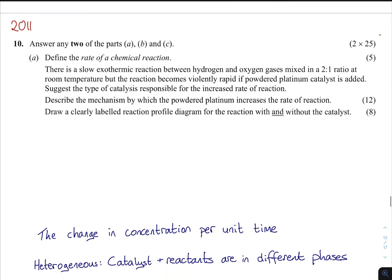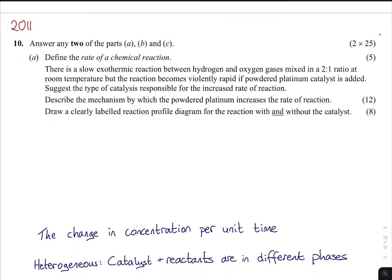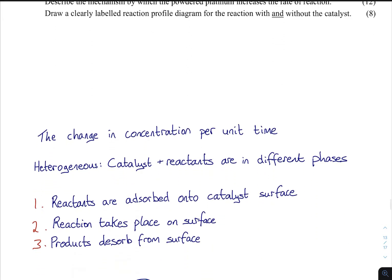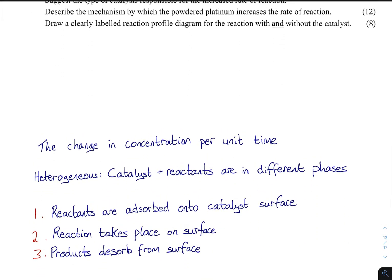2011 - 25 marks. Define the rate of reaction: change of concentration per unit time. Suggest the type of catalysis responsible for this increased rate of reaction. You're using platinum there, powdered platinum with hydrogen and oxygen gases. So you've got a solid and a gas - it must be heterogeneous. They're in different phases - you have a gas and you have a solid.